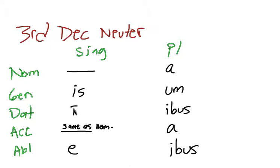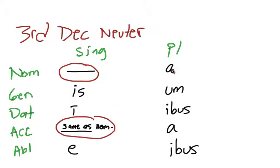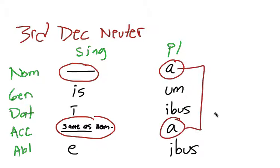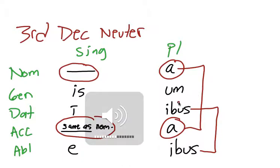So we have: nominative varies, genitive -is, dative -e, accusative same as nominative, ablative -e, and then plural: -a, -um, -ibus, -a, -ibus. Some observations about third declension neuter: nominative and accusative are the same; nominative and accusative plurals end in -a; and the dative and ablative plural are the same — -ibus. Remember the dative and ablative plural are the same for every declension.